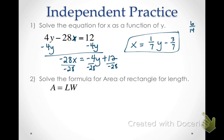Number 2 says to solve the formula for area of a rectangle for the length. I want to get l alone, so I'm going to divide both sides by w. And there we go — l equals area over w.